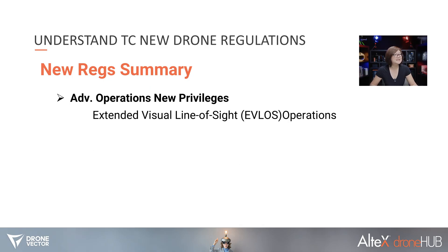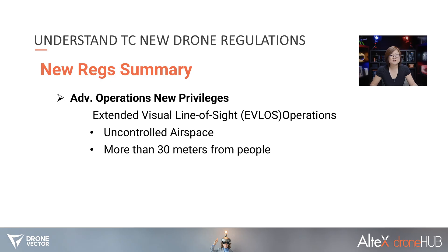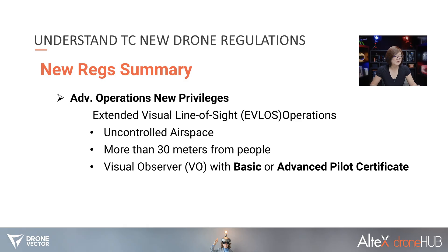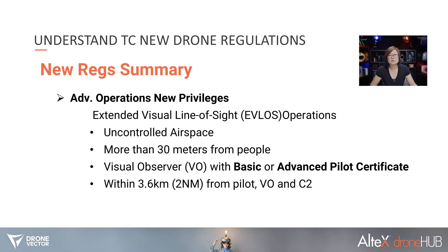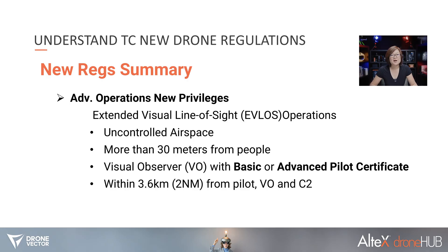Next is extended visual line of sight, EVLOS operations. It must be in uncontrolled airspace, more than 30 meters from people, using a visual observer with advanced pilot certificate, and the operation is within 3.6 kilometers or two nautical miles away from the pilot, visual observer, and your command and control station. EVLOS is another form of limited beyond visual line of sight, as a pilot can no longer see the drone at 3.6 kilometers away.